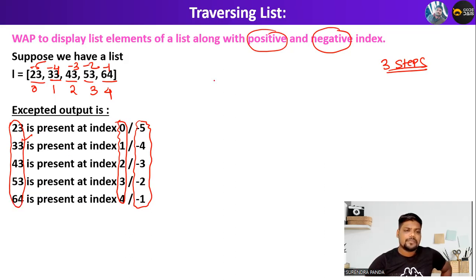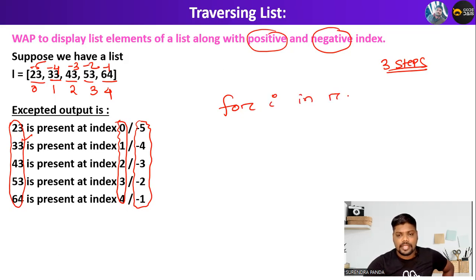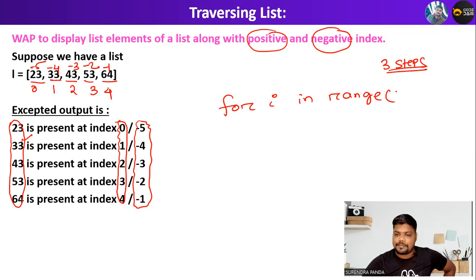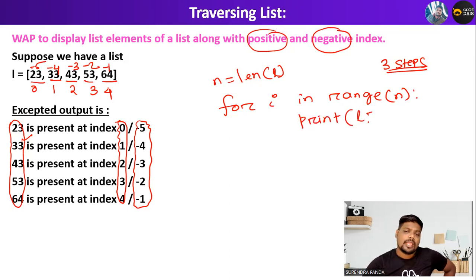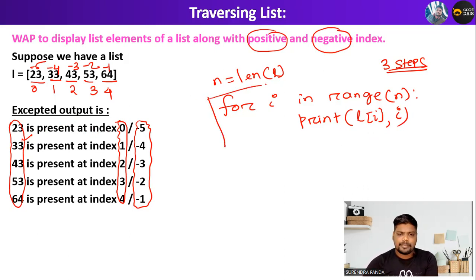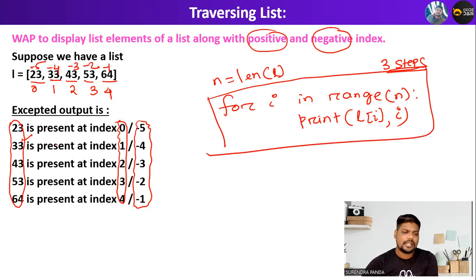We will write: for i in range(n). Please watch the video till the end, then only you will get clarity. Here the size is 5, so I will pass 5. Let me calculate the length: n is equal to len(L), and len(L) is 5. So I write range of n, and inside this, I will write print L[i] and I. This is the code to display these values along with the positive index values.